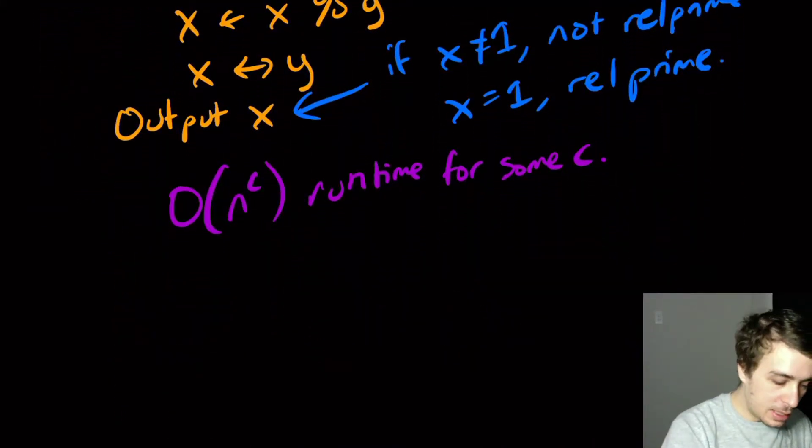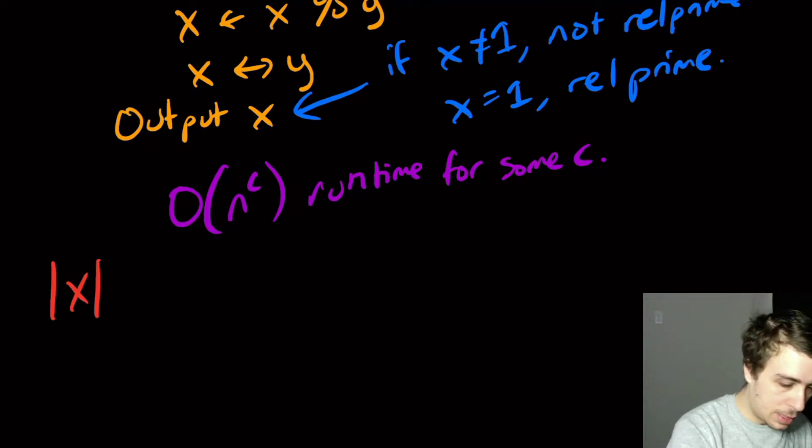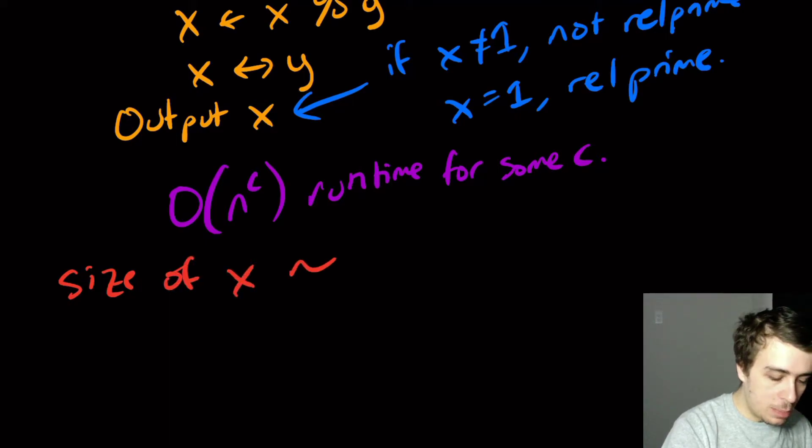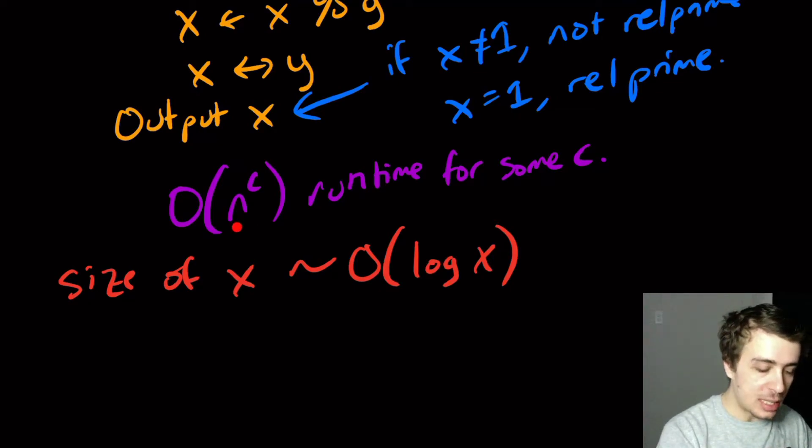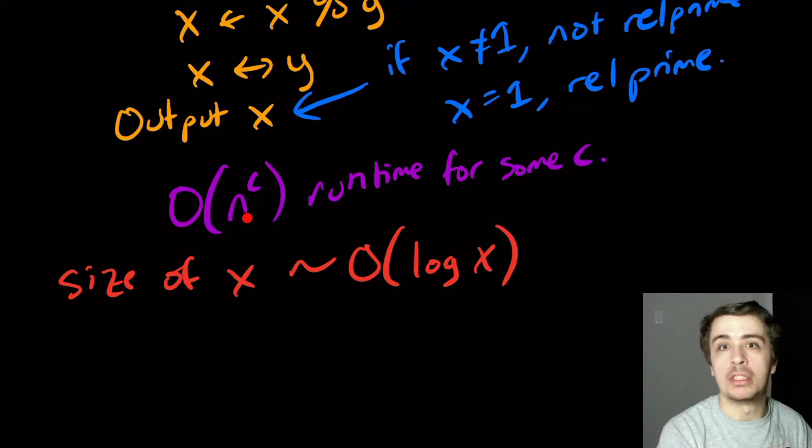So the size of x is going to be roughly log, or I should even say, let's say big O of log x in size, the number of bits required to present x to the computer. So I can't just say like x to the C if that happens to be the runtime, because the number x is exponential in the size of x. So we're always working in our runtimes with the size of the input, not the valuation of the input here.